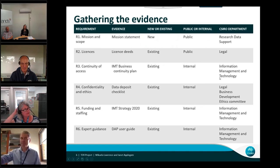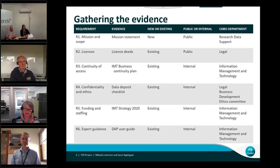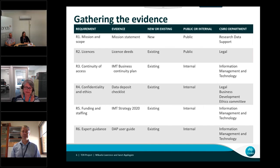Gathering the evidence: the certifying body has a preference for evidence that is public, and we found this a major challenge. In this table are some examples of the evidence we used for the first part of the requirements — the organisational-related requirements from requirement one to six. It gives an idea of new evidence we developed, such as the mission statement, and also the difficulty with providing publicly available evidence. It also provides information about the departments we consulted for expert guidance within our organisation, such as legal, business development, and staff from within our Information Management and Technology department.